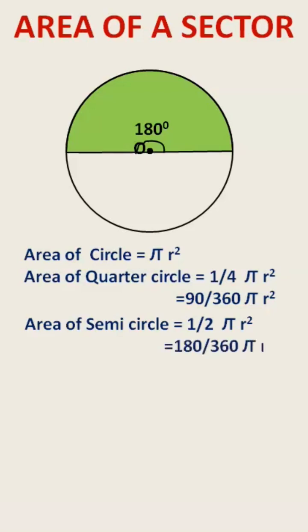This half again can be written as 180 by 360 into pi r square. 180 is the angle at the center by total angle 360.